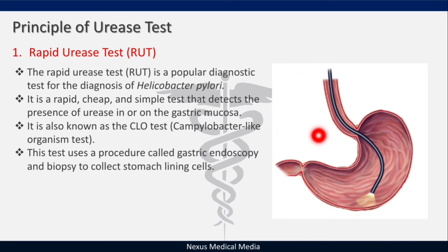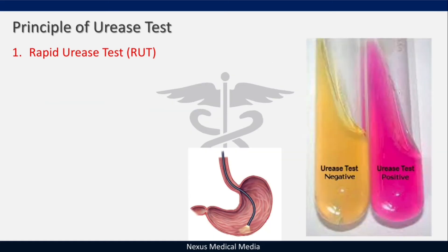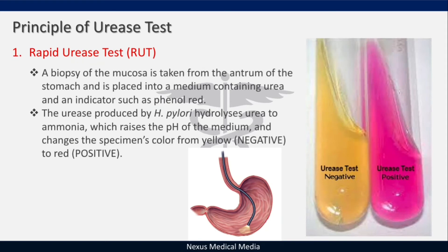This test uses gastric endoscopy and biopsy to collect mucosal cells — a flexible procedure with a camera. A biopsy is taken from the antrum of the stomach and placed onto a medium containing urea and an indicator like phenol red. Urease produced by H. pylori hydrolyzes urea to ammonia, raising the pH and changing the color from yellow (negative) to red (positive).